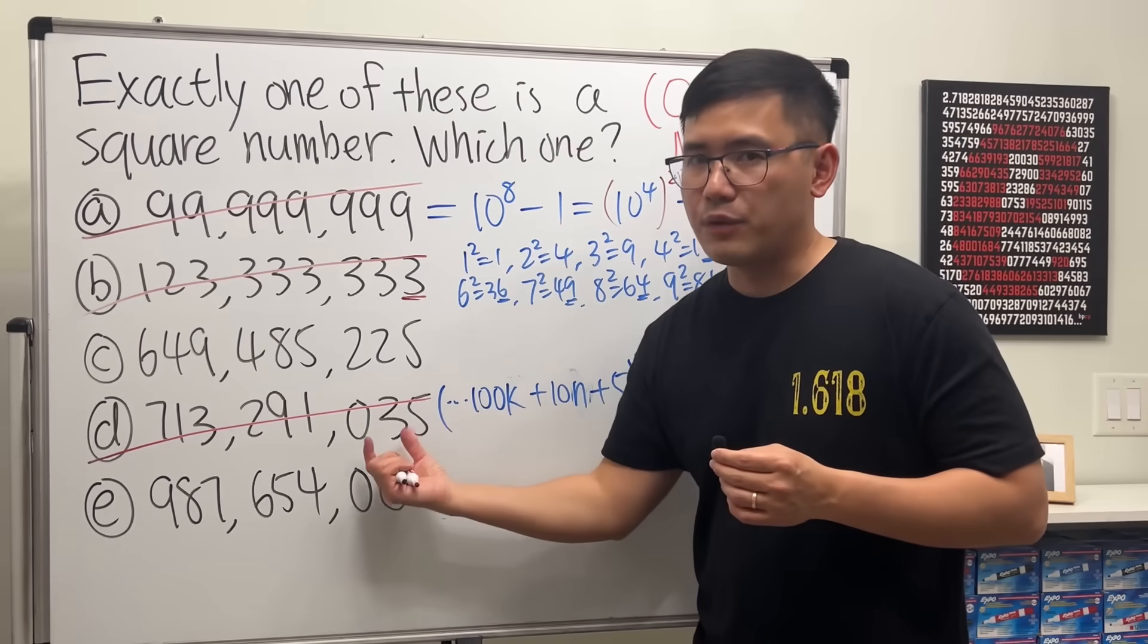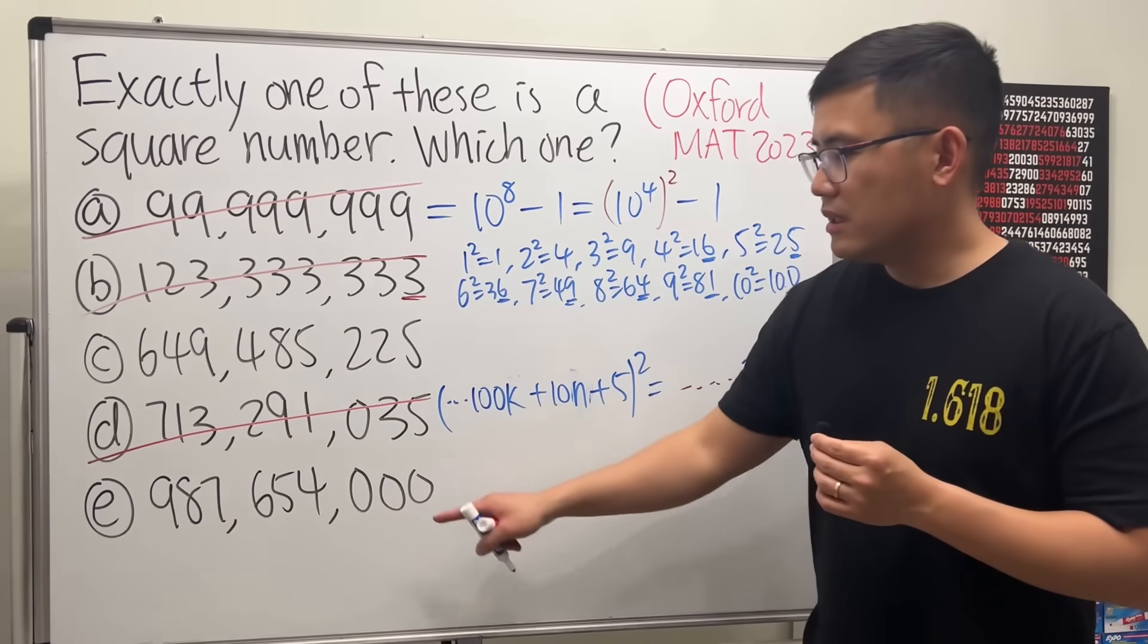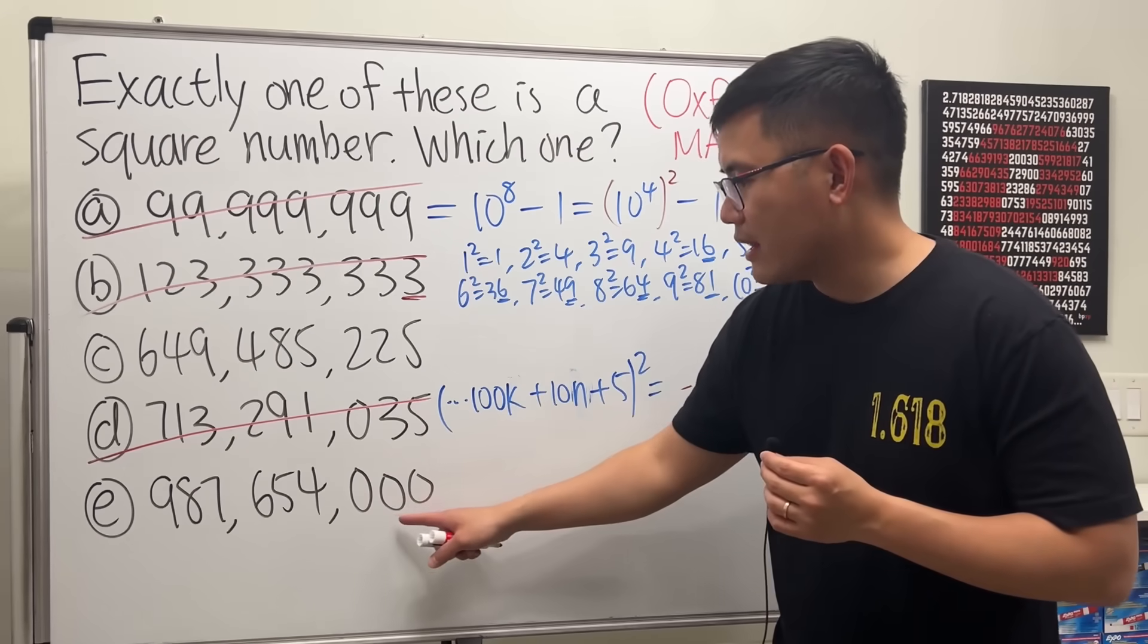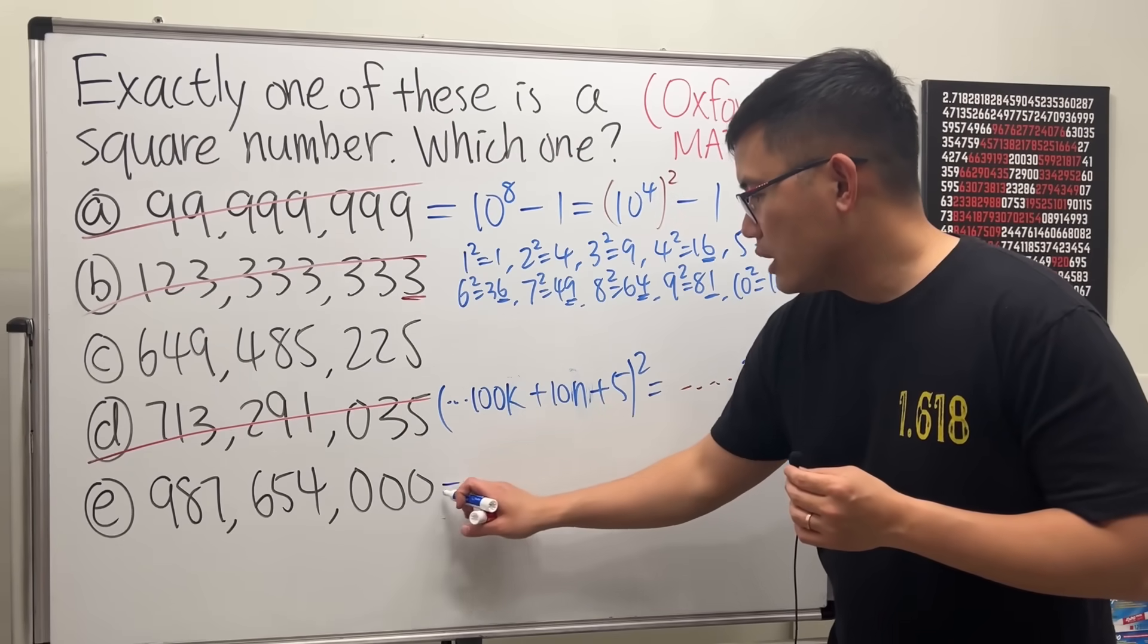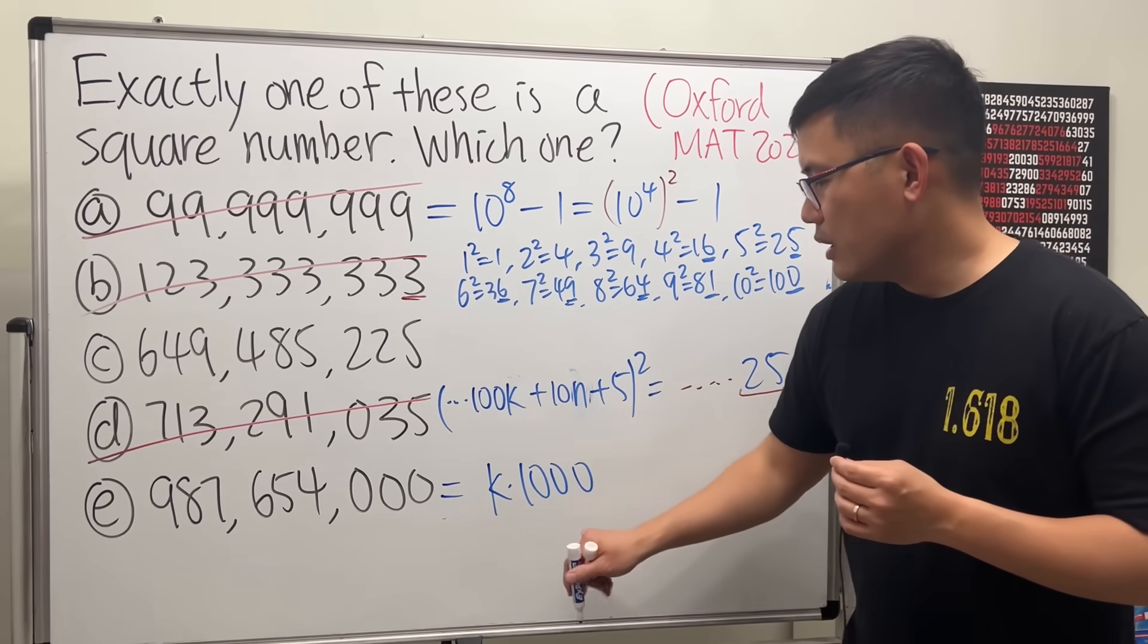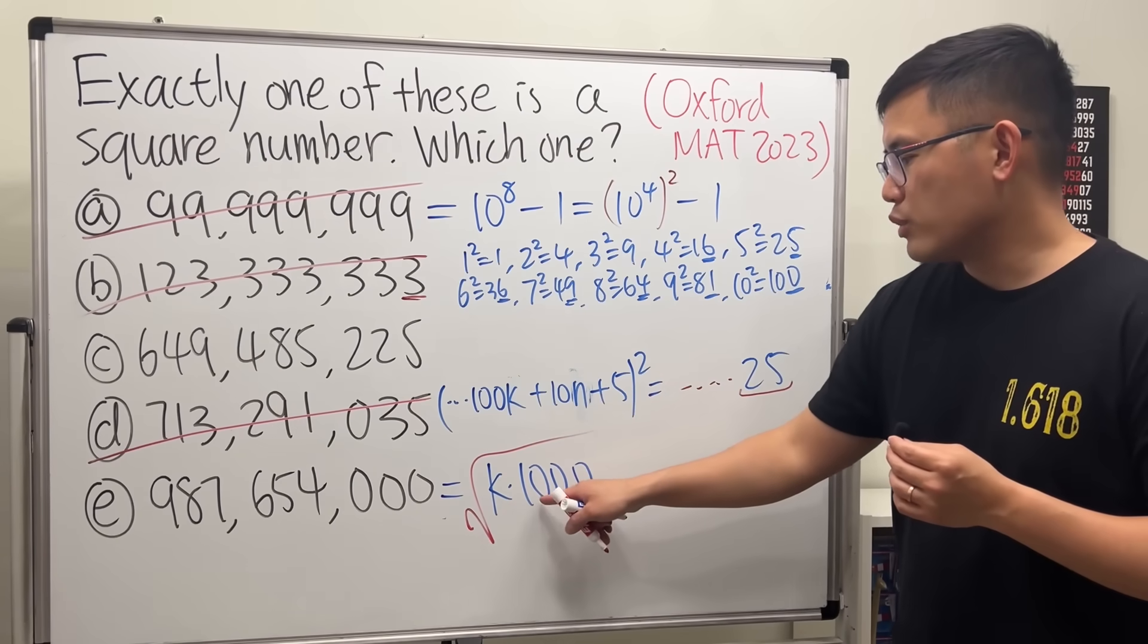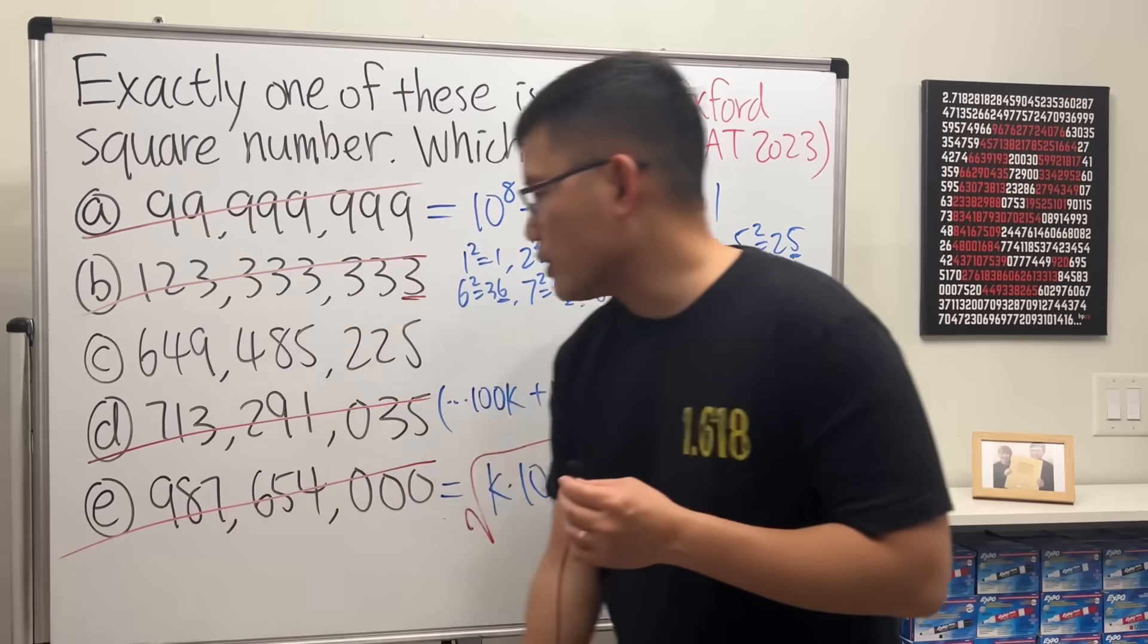Okay, how about E? Can this be a square number? No, because this is a multiple of 1,000—it ends with three zeros. So imagine we have some number k times 1,000. And if you want to take the square root of it, well, square root of k I don't know, but square root of 1,000 certainly is not going to give you a whole number. So this is also a no.